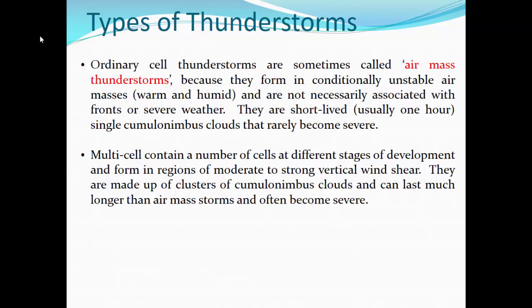The multi-cell complex, or multi-cell thunderstorm, is most frequently what we see. They contain a number of cells at different stages of development, and they form in those regions of moderate to strong vertical wind shear. An ordinary cell thunderstorm is not going to have the wind shear. Once you get wind shear — winds changing with speed or direction through the vertical profile of the atmosphere — that's when you start to see multi-cell thunderstorms. They are made up of clusters of cumulonimbus clouds and can last much longer than air mass storms, and oftentimes they do become severe.